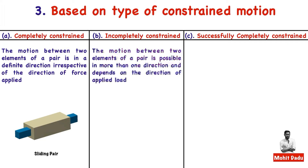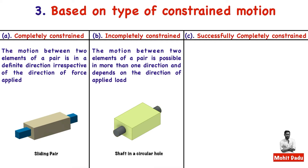Incompletely constrained motion means the motion is not controlled in a specific manner — motion is possible in more than one direction and depends on the direction of applied load. For example, a circular shaft in a circular hole can both translate axially and rotate; which motion occurs depends on whether an axial load or a rotational moment is applied.